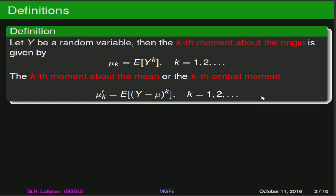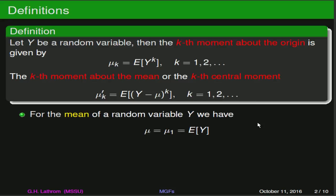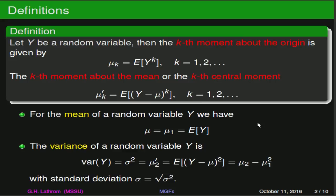For the mean, we're familiar with that just being the expected value of y. The variance of a random variable y is really the second central moment about the mean. And of course our standard deviation is just going to be the square root of the variance.